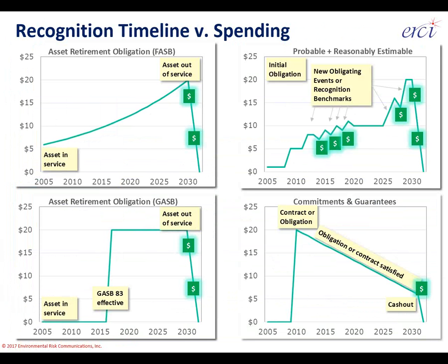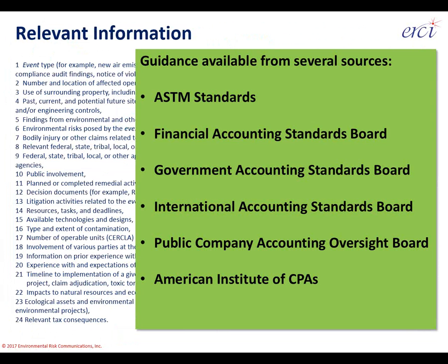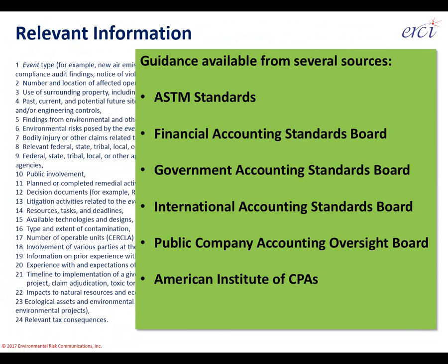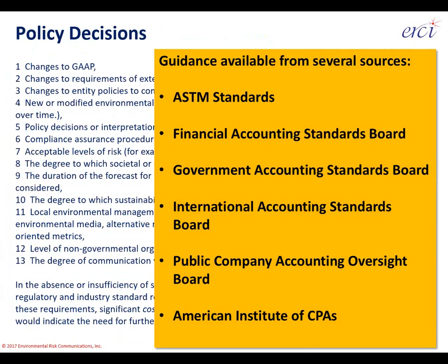Commitments and guarantees move on their own clock, very different from work you're planning to perform yourself. Within the ASTM standard E2137, there's relevant language I encourage you to review along with the FASB, GASB, and IASB standards. All GAAP pieces listed here except the ASTM and AICPA standards are available for free from the standard centers. For policy decisions, you'll get guidance from internal company policies as well as these GAAP standard centers.